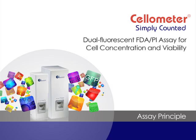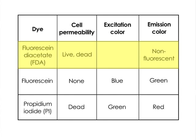The dual fluorescent diacetate (FDA) and PI assay is used for cell concentration and viability. Fluorescent diacetate is non-polar and non-fluorescent. It is permeable to both live and dead cells.